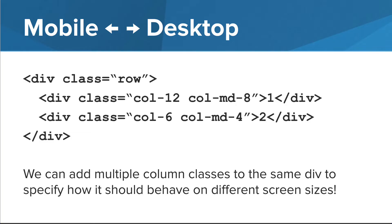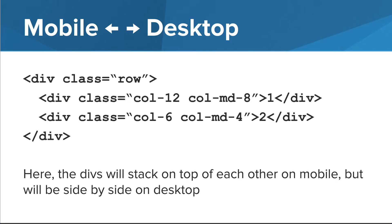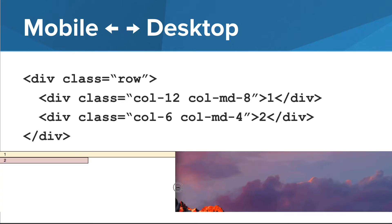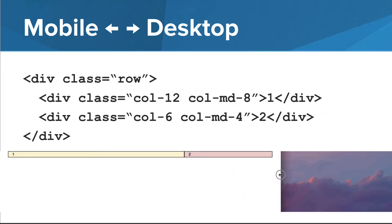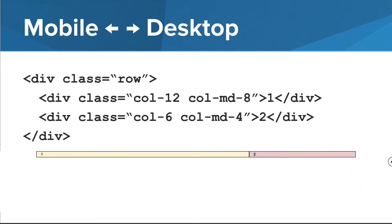We can also add multiple column classes to the same div to specify how it should behave on different screen sizes. Here, the col- prefix denotes the number of columns for the extra small device — so the first div will take up 12 columns on a mobile device, and the second div will take up 6 columns on a mobile device. The col-md prefix denotes the number of columns on a medium device, such as a desktop. So if viewed on a desktop, the first div will take up 8 columns, and the second div will take up 4 columns. Here we can see the grid system adjusting from an extra small or mobile breakpoint to a medium screen-sized breakpoint as the width of the page increases.